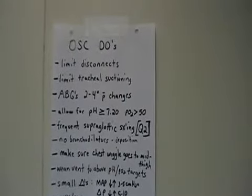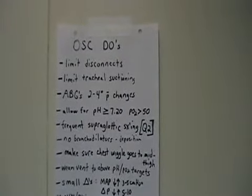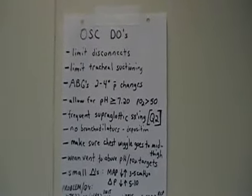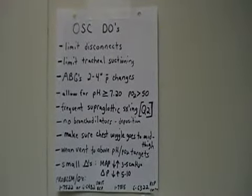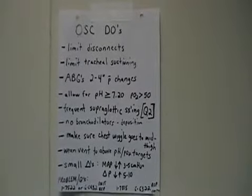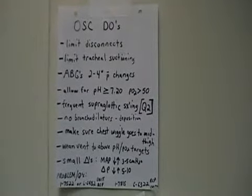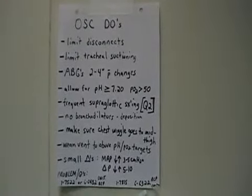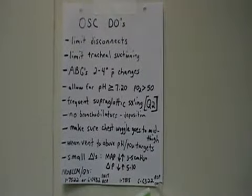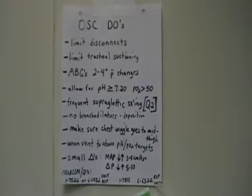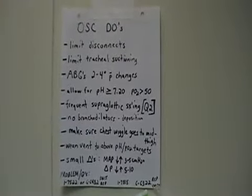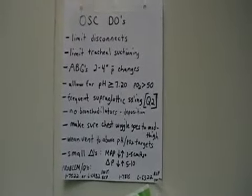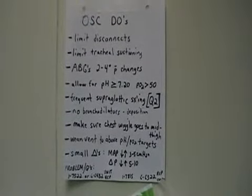This is supposed to be lung protective, so the less we ventilate, the better the chances are for the lungs to heal. Allow for permissive hypercapnia with lower PO2s. Frequent supraglottic suctioning is important because these patients are typically paralyzed or heavily sedated — you want to clear the oropharynx of secretions so they don't get down the ET tube and into the lungs and cause ventilator-associated pneumonia. No bronchodilators, obviously, because you don't know where the deposition of the medication is going. And we talked about the chest wiggle — we want it to go to the thighs. If you get decent blood gases, lean your vent to the lower targets because you want to be ultimately lung-healing.